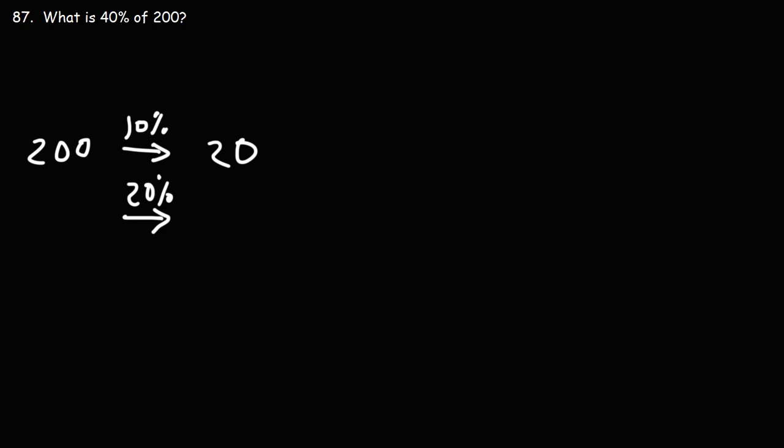Well, if 10% is 20, 20% is twice the amount of 10%, so it should be twice the amount of 20, which is 40. Now what's 40% of 200? It's twice the amount of 20%, twice the amount of 40 is 80.